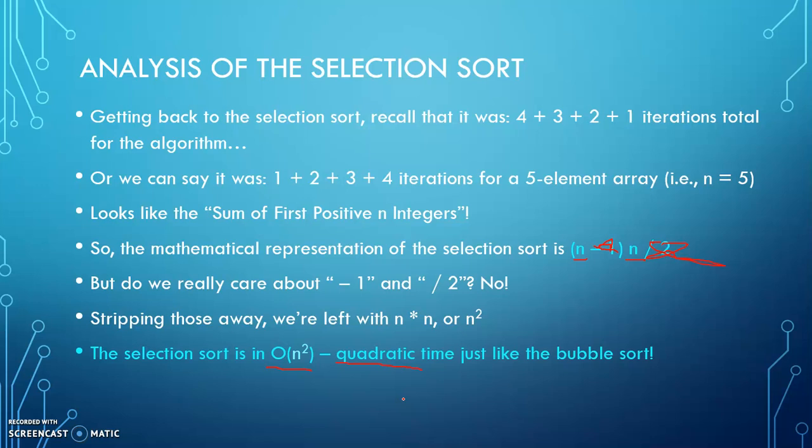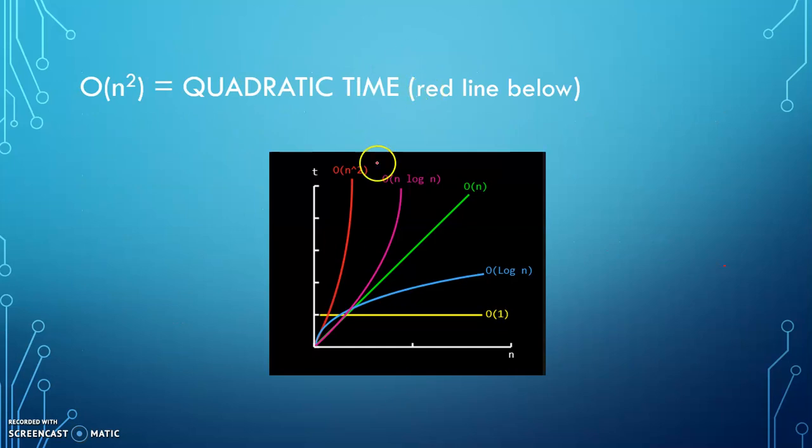But not by much because there's still, like if we look at it in the context of big O, they're still both in quadratic time. And when the input of the algorithm, in other words, the size of the array increases, the amount of time it takes to run that algorithm is going to increase exponentially, also with the selection sort as well as the bubble sort.